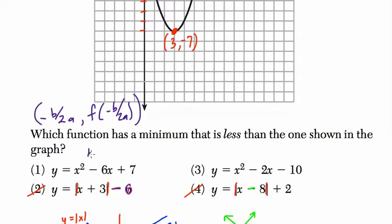So in the first one, b equals negative six. And a equals one. b is always the number next to the x value. A is always the number next to x squared. So negative b over 2a would be six over two, which is three. And then I take f of three.